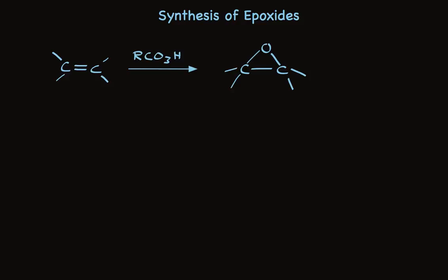When you treat an alkene with a peracid, one of the oxygens of the peracid is transferred directly to the alkene to make an epoxide. While there are several different peracids that are used, there are only a few that are common. The most common ones include peracetic acid and perbenzoic acid. The chemistry works well regardless of the group attached directly to the peracid.